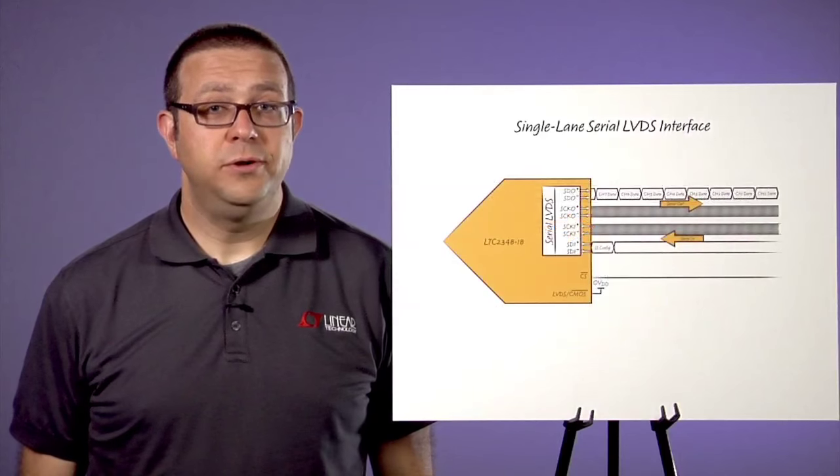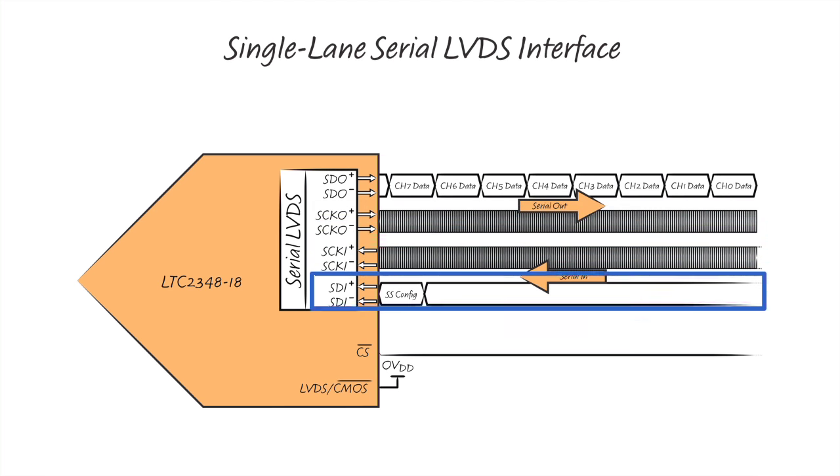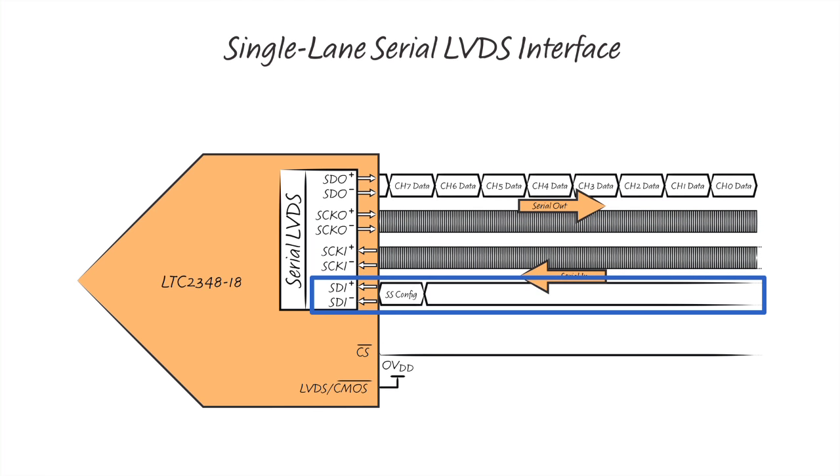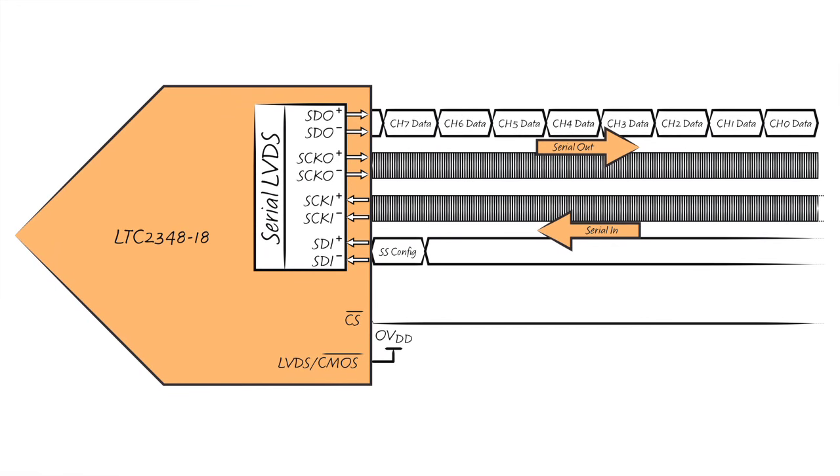In LVDS mode, a single lane of serial data output provides conversion results for all input channels. A phase-aligned data capture clock is provided for capturing output data at the receiver. The interface features one serial data input lane for configuring each channel's softspan range. LVDS signaling is particularly beneficial in applications requiring longer communication distances and lower emission of electromagnetic interference. The single lane LVDS interface supports the full rated device throughput of 200,000 samples per second per channel.